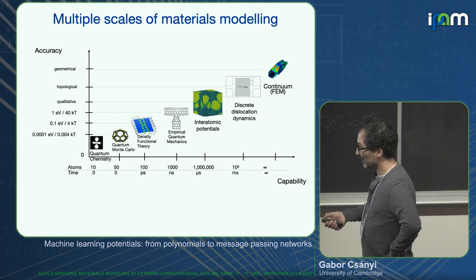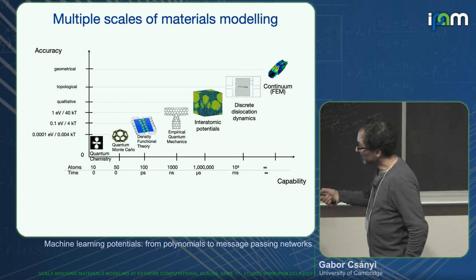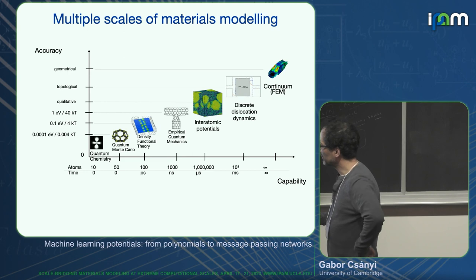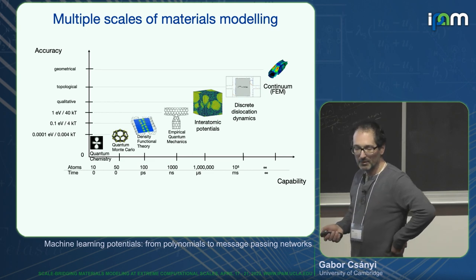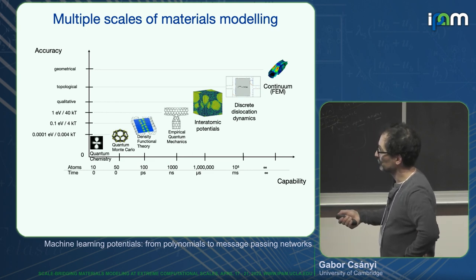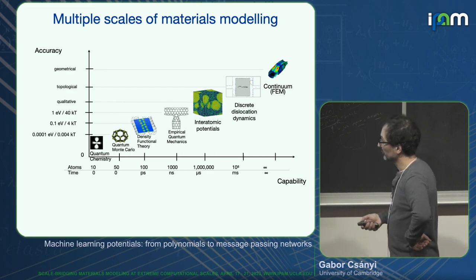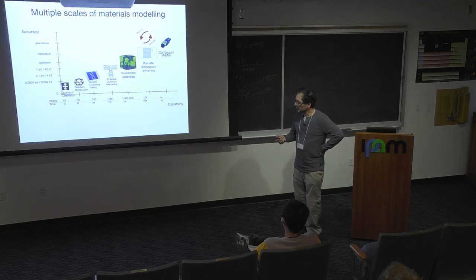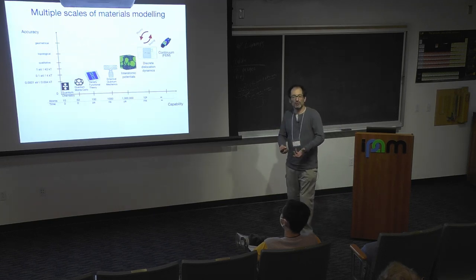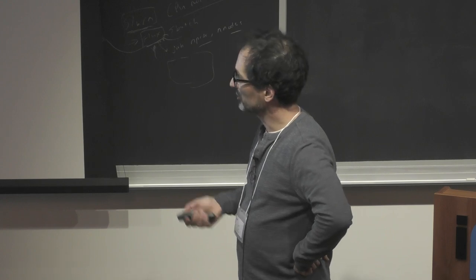My axes are capability and time — number of atoms versus time. The rest of the lecture will be around atomistics and interatomic potentials, and you can see it's roughly a log scale. Here is an accuracy scale, which is quite provocative or maybe aggressive. For example, refusing to give numerical accuracy to anything above actually doing quantum mechanics on the electrons.